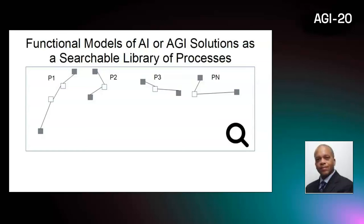By taking the most fit component at achieving each function, all research and development might then converge on the functionality most fit in representing the observed functions of cognition. In conclusion, in a human-centric functional modeling approach, all current AI or AGI approaches then potentially become processes that might be added to a library that such a meta-model of AGI might use to increase its general problem-solving ability.